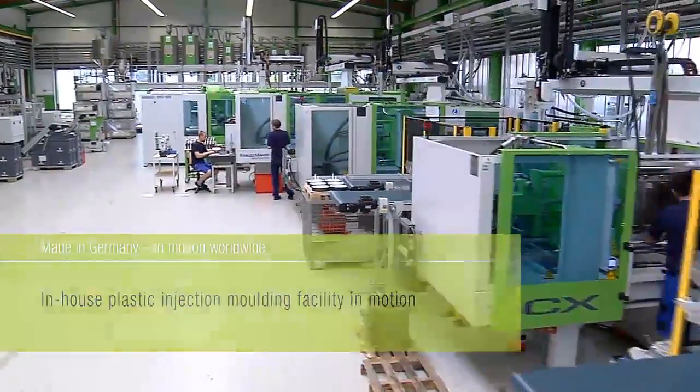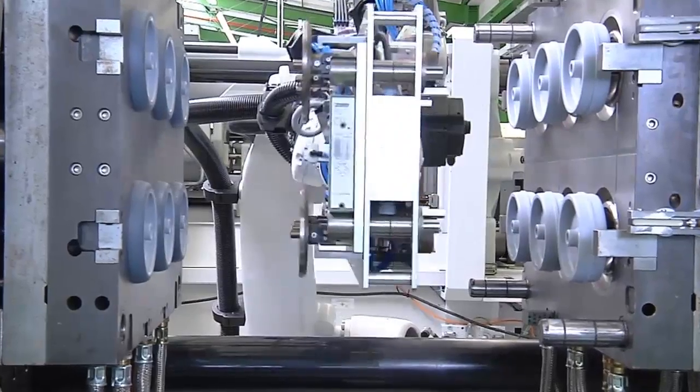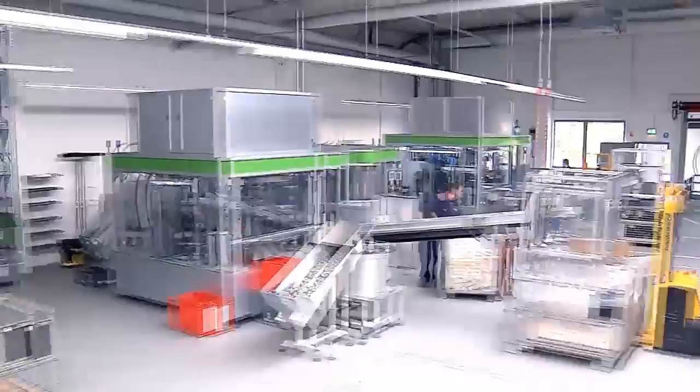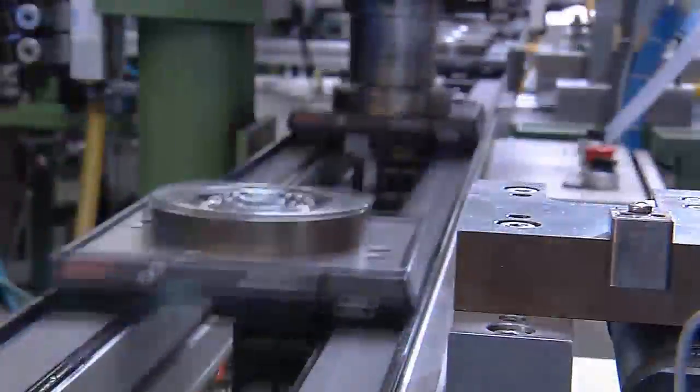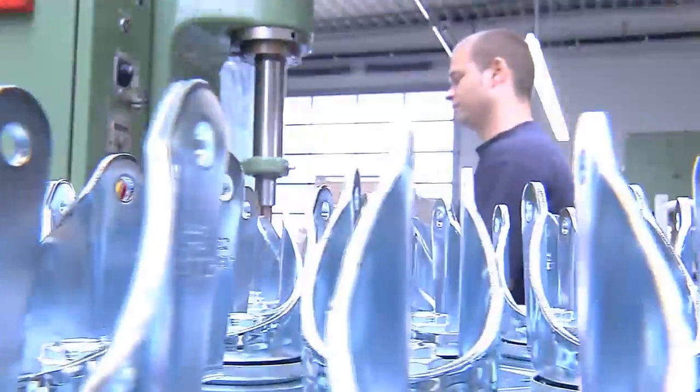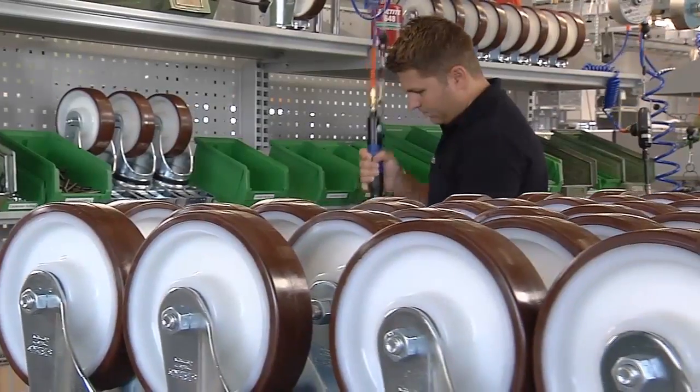In an in-house plastic injection molding facility with complex linked systems. In wheel and caster assembly with fully automated assembly lines for perfection on an industrial scale and a commitment to flexibility in the final assembly of customer-specific small batch quantities.